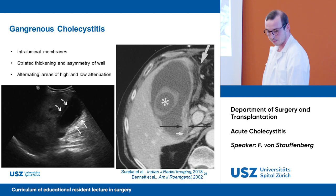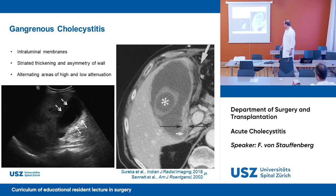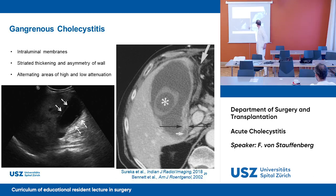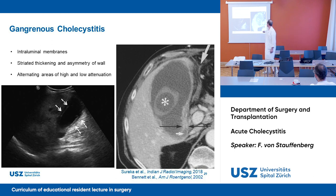In imaging, gangrenous cholecystitis can be identified by intraluminal membranes as seen on sonography, by striated thickening and asymmetry of the wall as seen on CT scan, and by alternating areas of high and low attenuation.